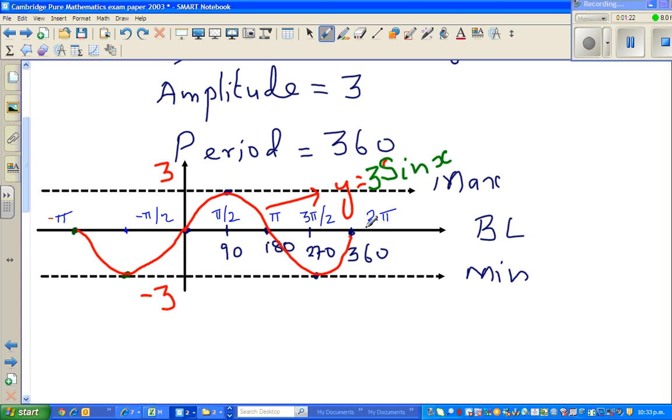As you know, a sine curve is a cyclic curve. Sine 0 is 0. Sine 90, I'm talking about y equals sine x, suppose the amplitude is 1. Sine 0 is 0, sine pi by 2 is 1, sine pi is 0, sine 3 pi by 2 is negative 1, and sine 2 pi is 0.